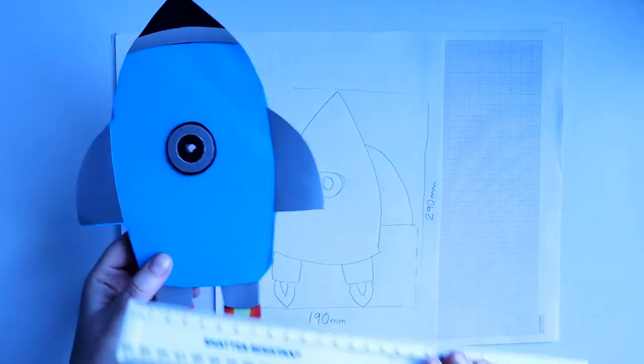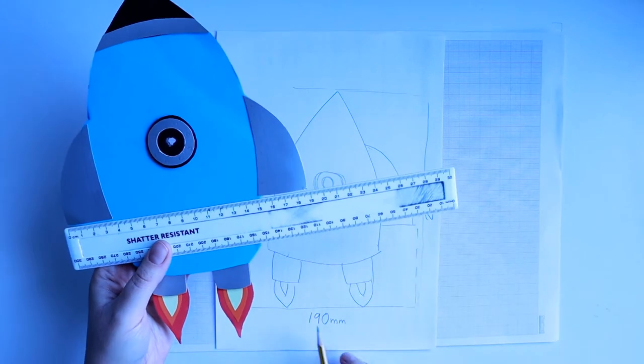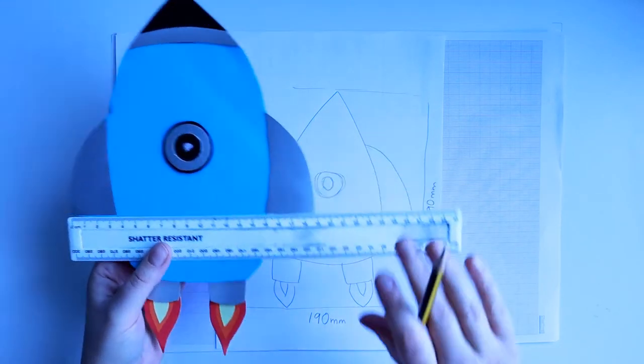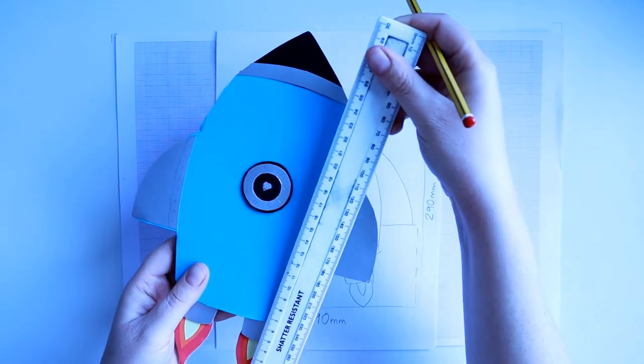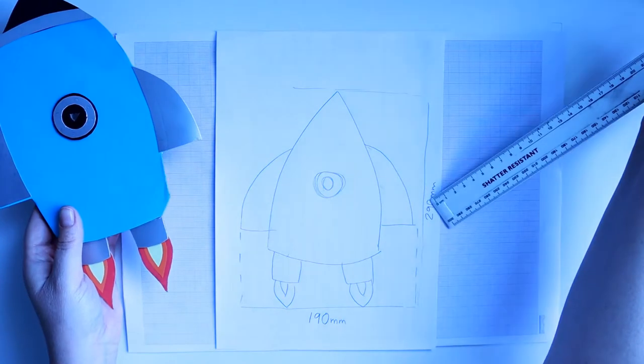So what I've done is I've measured from the widest part, which is on mine the wingspan, so that's 190. And then I've also done the right at the bottom of the flame and measured right at the top there, which turns out to be 290mm.